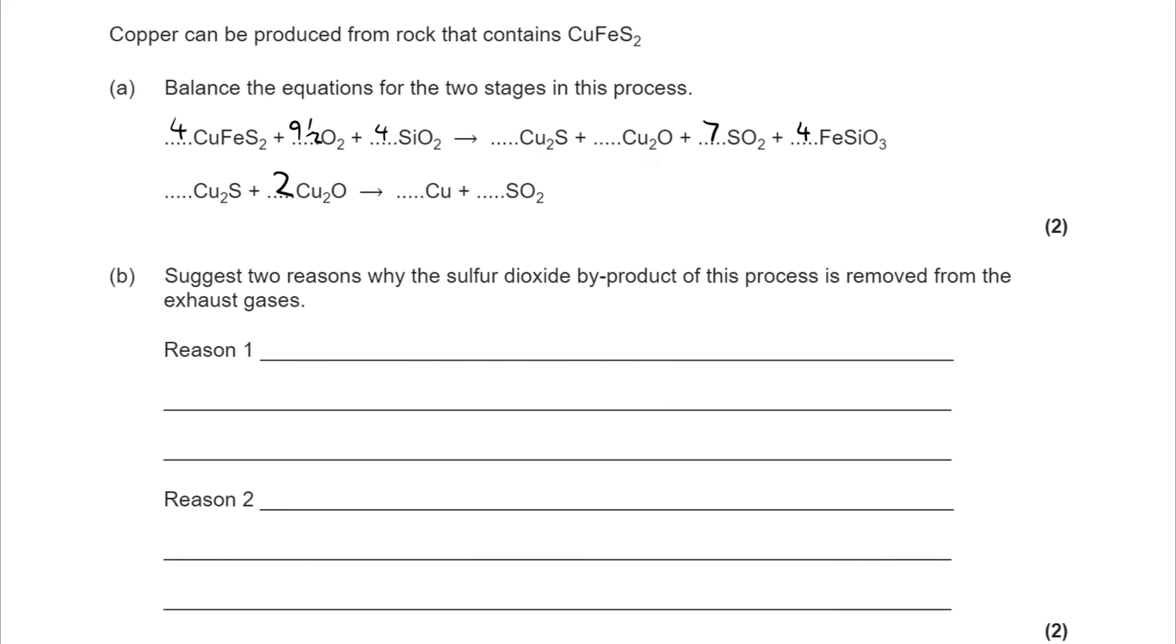Moving to the second equation, need to multiply this one up to balance the O's. And then from there, I can see that I've got six Cu's on the left, so I need six Cu's on the right.